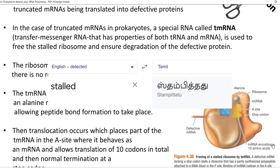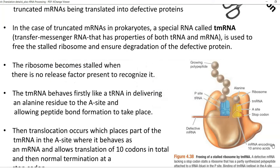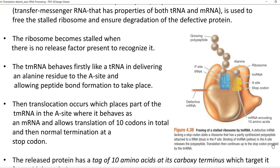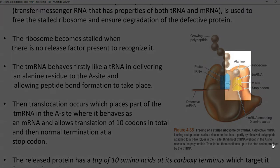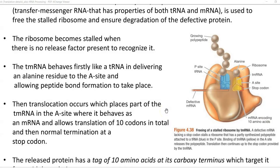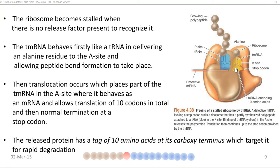Ribosomes become stalled when no release factor is available to recognize the stop codon. The tmRNA behaves primarily as a tRNA, helping to deliver an alanine residue to the A site in the ribosome, thus allowing peptide bond formation. The tmRNA then acts as an mRNA, allowing translation of 10 codons in total followed by a termination codon.